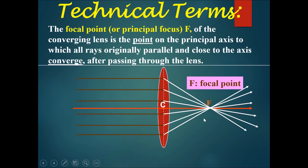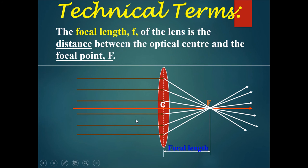The focal length of the lens is the distance between the optical center and the focal point F. So this length here is the focal length.